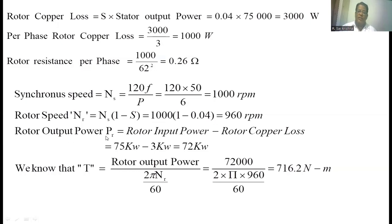The rotor output power equals rotor input power minus rotor copper loss. We already calculated the rotor copper loss as 3 kilowatts. So rotor output = 75 − 3 = 72 kilowatts (three-phase). The torque developed equals rotor output power divided by the angular velocity of the rotor: 2π × nr / 60. With rotor speed 960 rpm, we finally get 716.2 Nm.